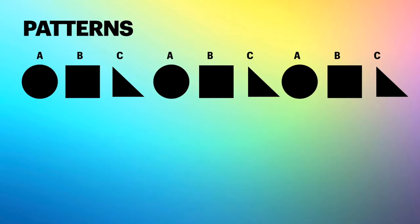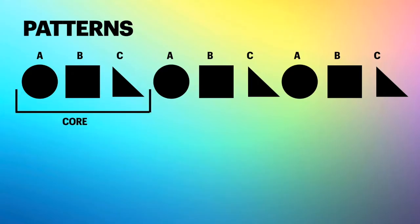The first shape gets an A, the next one gets a B, the next one gets a C, and so on. This is a typical way of naming a pattern, although it doesn't always have to be ABC — it just ends up being easier. When I'm trying to figure out what kind of pattern I have, I try to identify what's the part that is repeating. In this straightforward pattern, the core is the first three shapes — ABC — and that core repeats over and over again. So this is an ABC pattern.